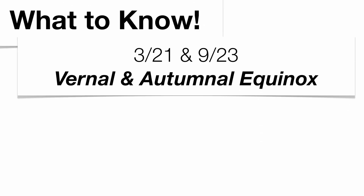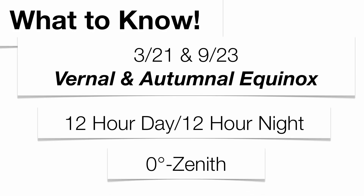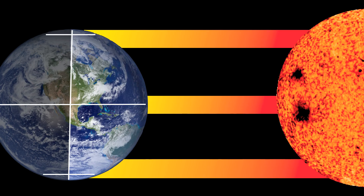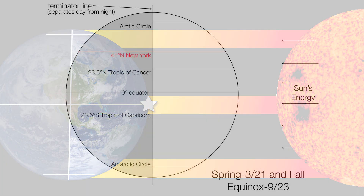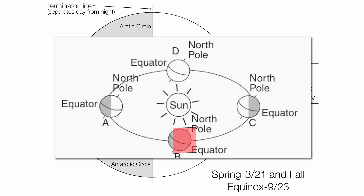For the two equinoxes — the vernal and autumnal equinox, the first day of spring and the first day of fall — you're going to get 12 hours of daylight and 12 hours of nighttime around the entire planet from North Pole to South Pole. The equator is the latitude that gets the most direct sun on those two dates, with the sun at the zenith. You can see the equator getting the most direct sun, and the entire planet getting 12 hours of daylight. The equinoxes occur at positions B and D, and the equator gets 12 hours of daylight and 12 hours of nighttime throughout the entire year.